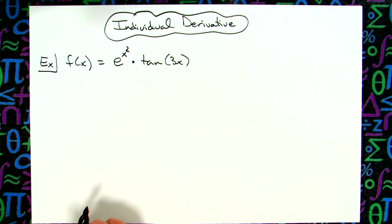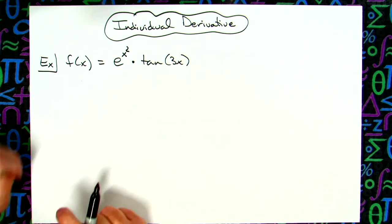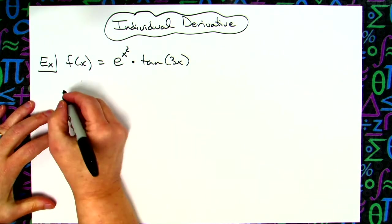In this video we're going to take a look at an individual derivative. It's just going to be a straight product rule, one that would be found in a Calc 1 class.